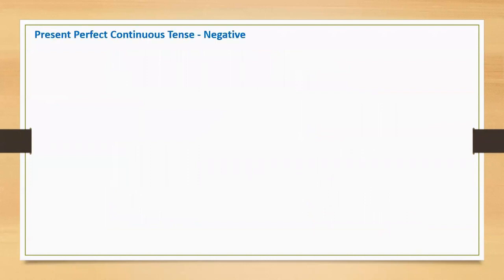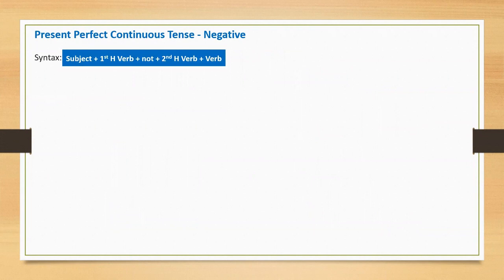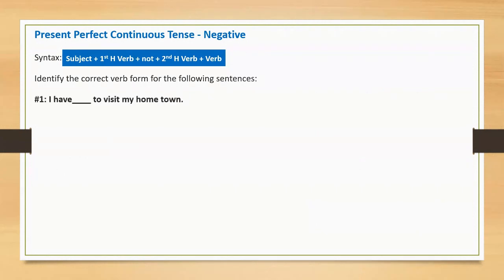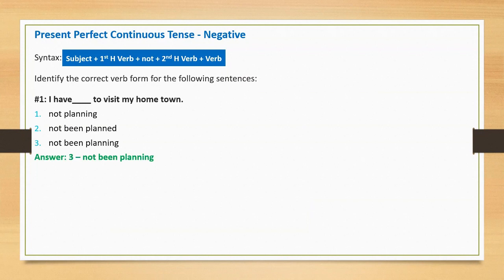Now I will discuss present perfect continuous negative sentences. Syntax: subject plus first helping verb plus 'not' plus second helping verb plus main verb. Sentence one: 'I have dash to visit my hometown.' Option one: not planning. Option two: not being planned. Option three: not been planning. Correct option: not been planning. Full sentence: 'I have not been planning to visit my hometown.'